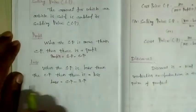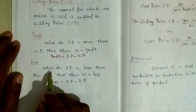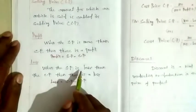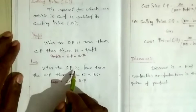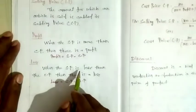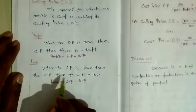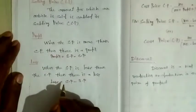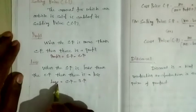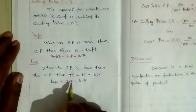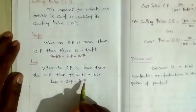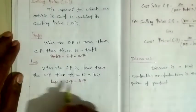Loss: when the SP is less than the CP, there is a loss. The formula is: Loss = CP minus SP.